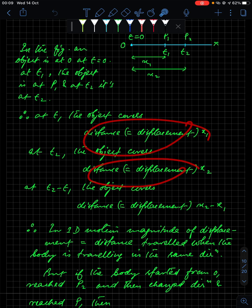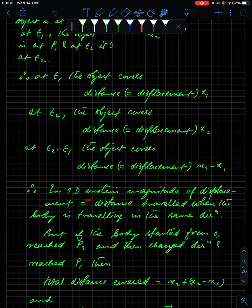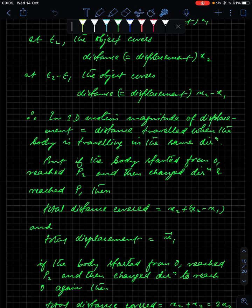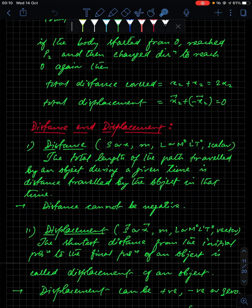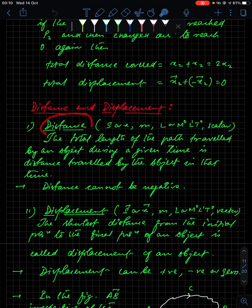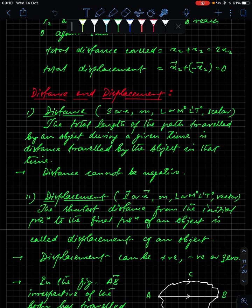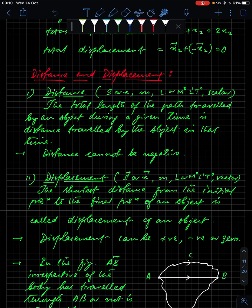In one-dimension motion, the magnitude of displacement is always equal to the distance traveled when the body is traveling in the same direction — this is very important. Distance is denoted by s or x; its SI unit is meter, dimension is L (written as M⁰L¹T⁰). Distance is a scalar quantity — it is the total length of the path traveled by an object during a given time, and it cannot be negative.